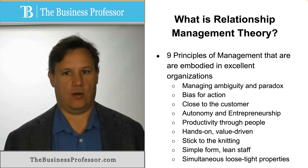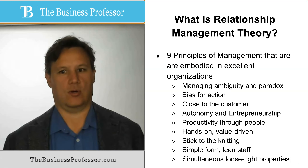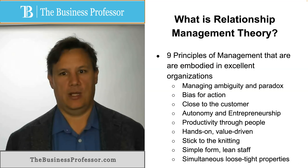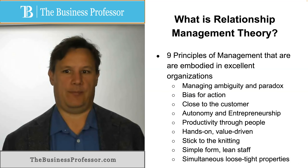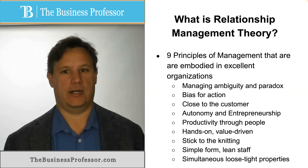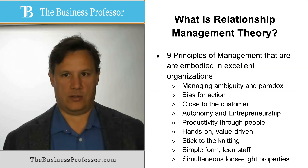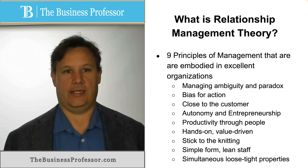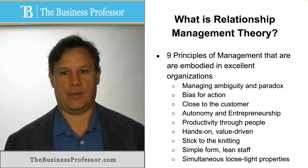Relationship management theory describes nine principles of management embodied in excellent organizations. The first principle is managing ambiguity and paradox, because there is very rarely a time where it's clear what needs to happen.